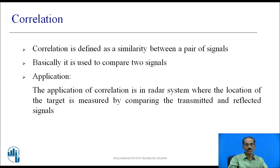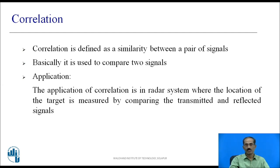Correlation is defined as a similarity between a pair of signals. Basically, it is used to compare two signals. Its application is in radar systems, where the location of a target is measured by comparing the transmitted and reflected signals. You transmit a signal from the transmitter, it reaches the receiver and reflects back, and those two signals are compared to identify the distance between the transmitter and receiver. This is one of the important applications of correlation.